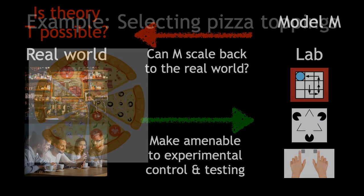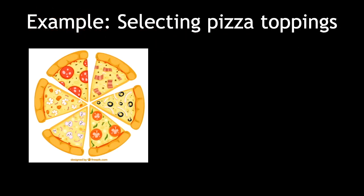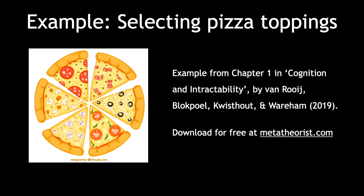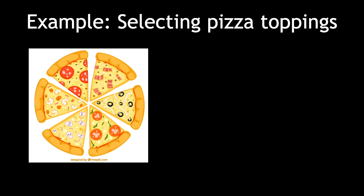To illustrate this idea, let us consider a simple example: selecting toppings on a pizza. Evidently, this is a vital real-world capacity for many of us to survive in the modern-day world. I can only briefly sketch the example here, but if you would like to read more about it, check out chapter 1 of the textbook that I co-wrote with Mark Blochpoel, Johan Christout, and Todd Boren. You can download it for free from metatheorist.com. Okay, on to the example.